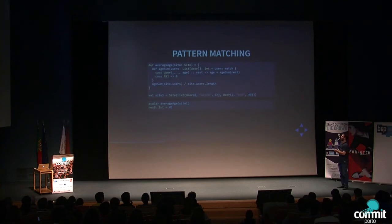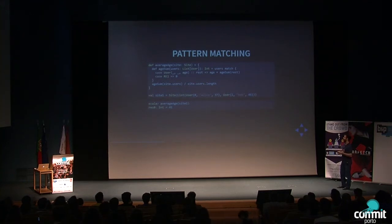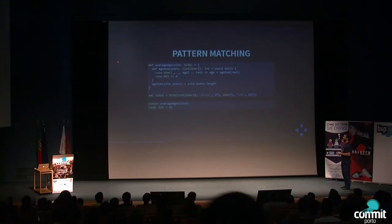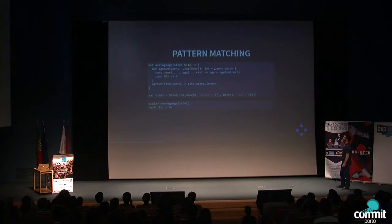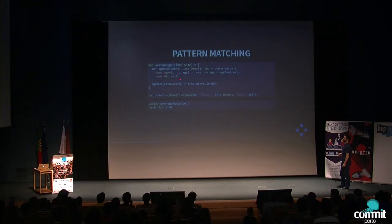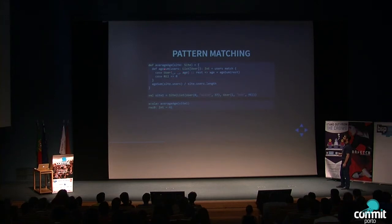Now to another nice feature of case classes: pattern matching. Pattern matching is very useful to decompose data out of classes and to do structural recursion. Here I want to define a function that computes the average age of users of a given site, by summing ages and dividing by the number of users. I pattern match on the list of users — the list can be either empty, in which case the sum is zero, or it can be a user followed by something else, in which case I pattern match further on the User case class to extract its age, and recurse.